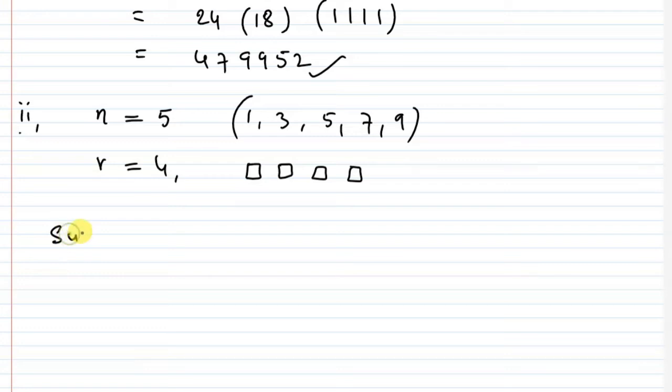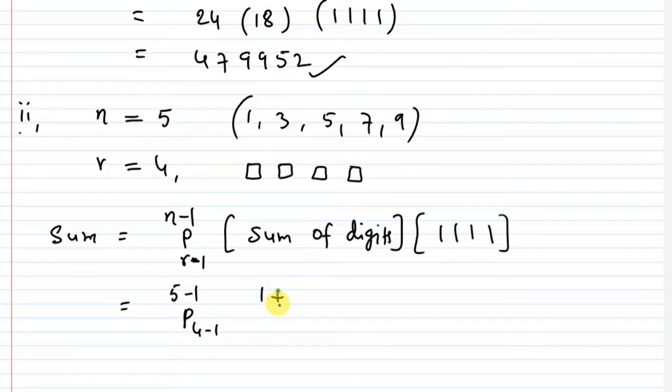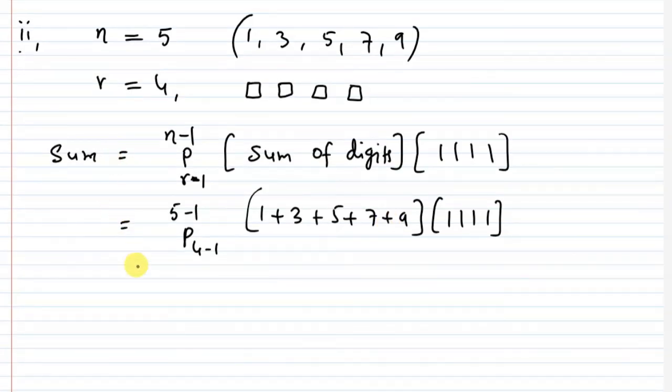Sum of all such numbers: the formula is n minus 1 P R minus 1. That's 5 minus 1 P 4 minus 1, which is 4P3 equals 24. Sum of the digits: 1 plus 3 plus 5 plus 7 plus 9 equals 25, into 1111.